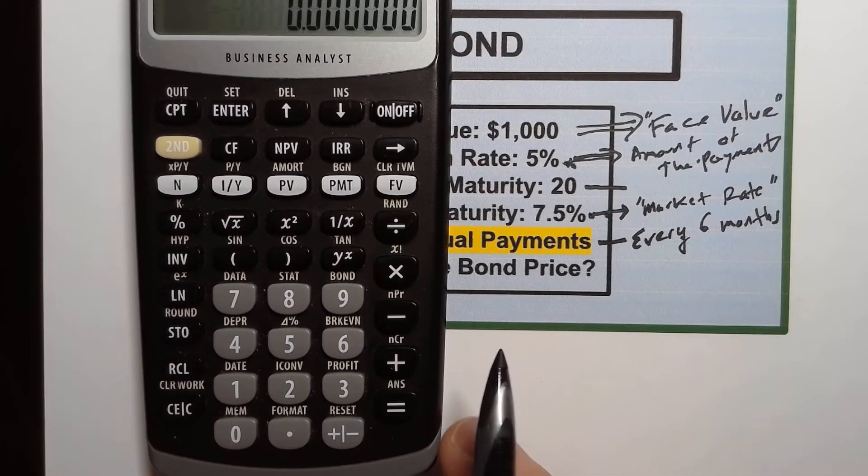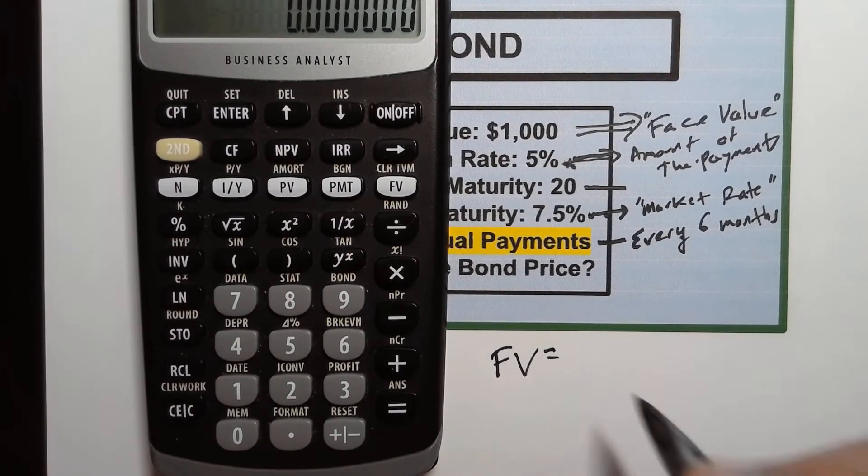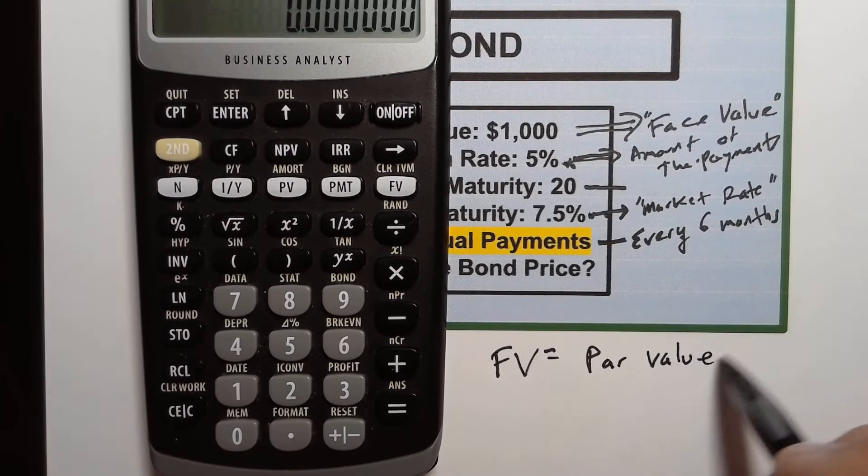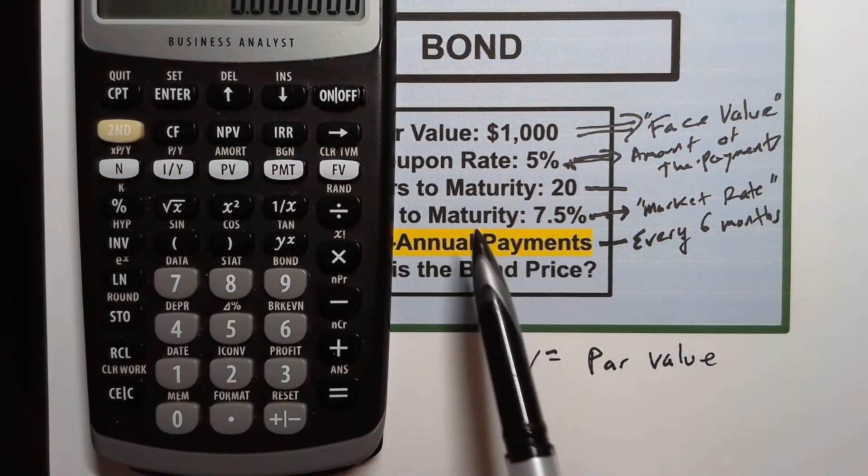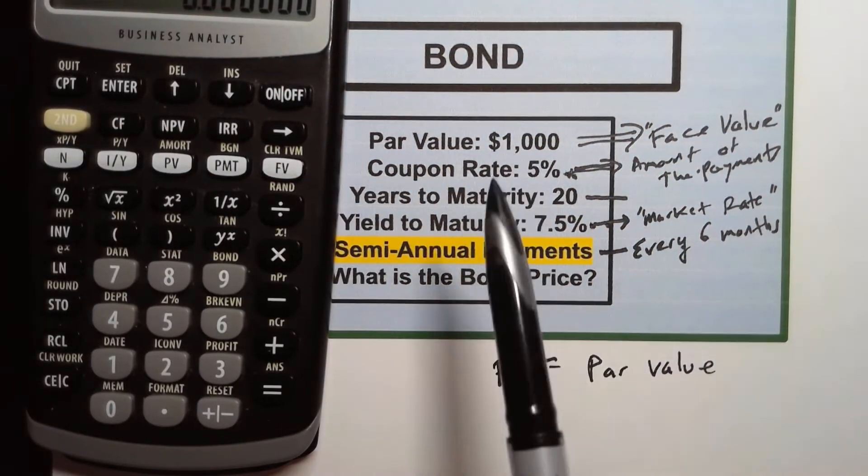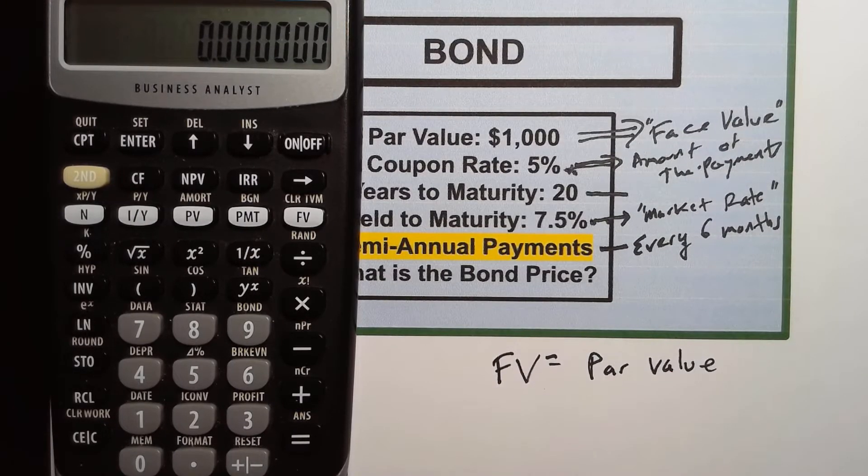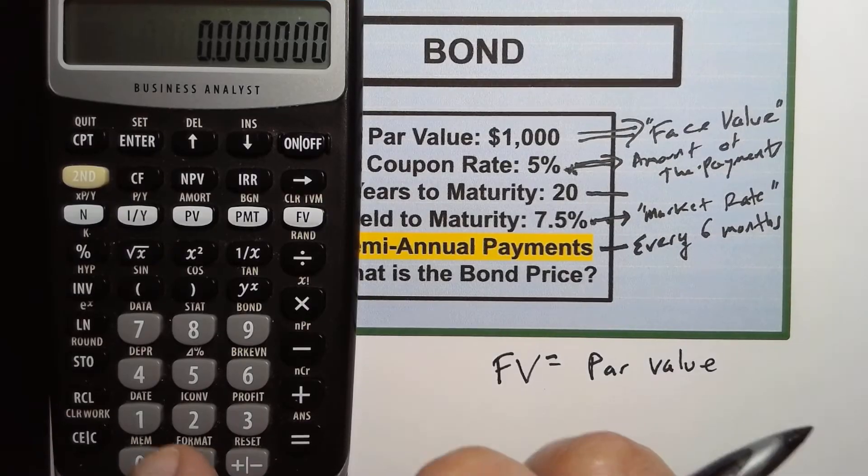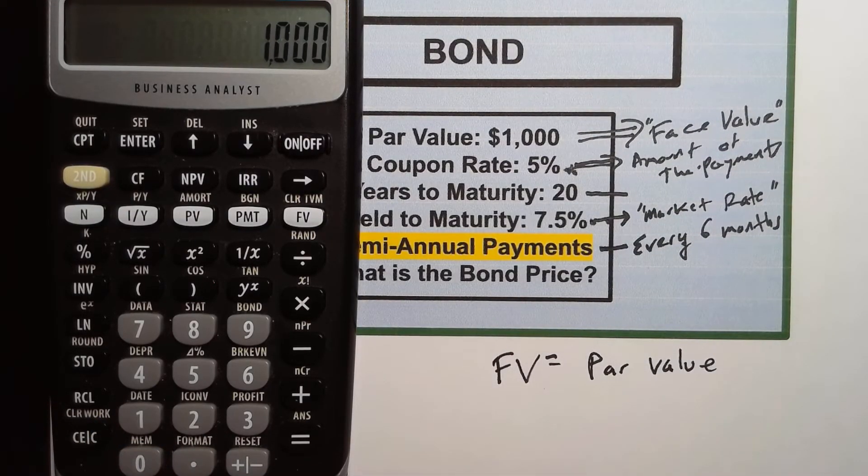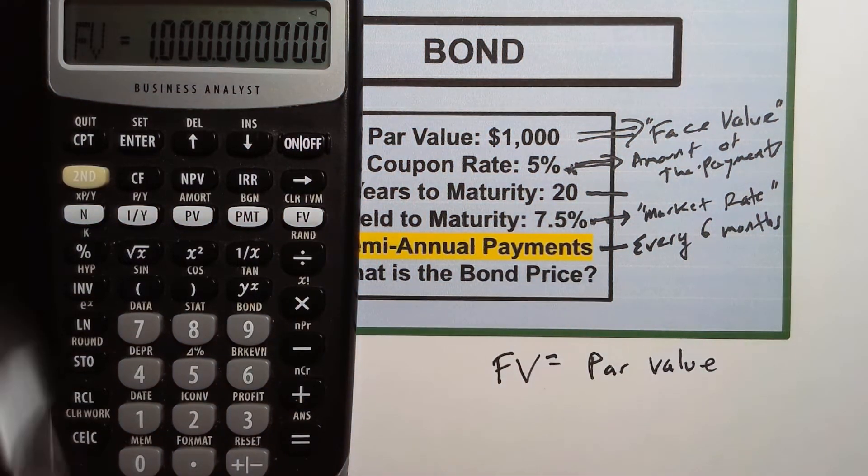Now we're going to start entering the information. So the first thing we need to know is what is the future value. The future value of the bond is its par value. In other words how much is that bond going to be worth at the time of maturity. So I'm going to put in the thousand dollars. I could put it in as a negative because it's going to show either the money in or the money out as a negative. If you put the money out as a negative the money in will be a positive and vice versa. It's just showing the flow of the money. Just for ease I'm just going to put it in as a positive. So we know that the future value is a thousand. So I type the number first and then I hit the FV button and you'll see that it says FV equals one thousand.